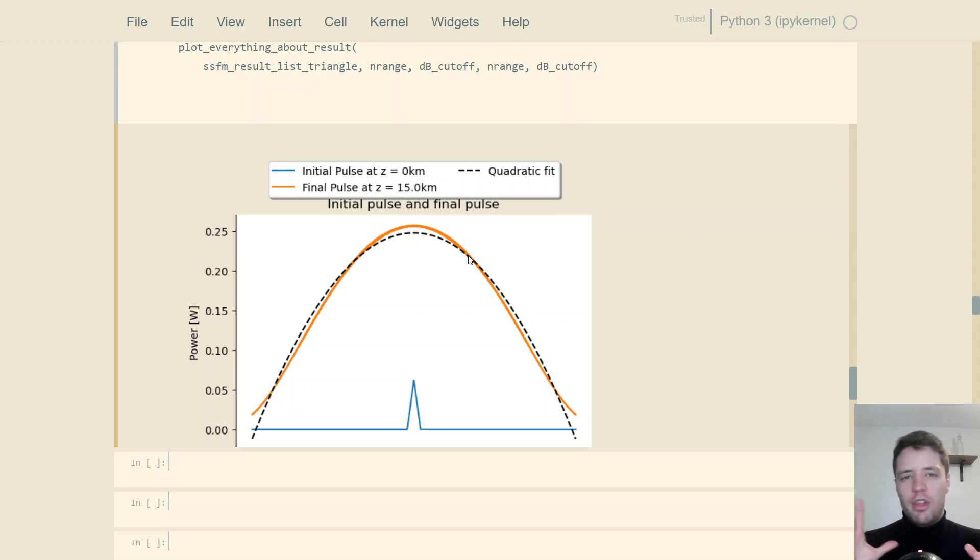And the reason why we call them similaritons is that, unlike solitons, which can actually perfectly preserve their shape, or at least have a consistent oscillation that's predictable, the similaritons will all have these parabolic envelopes, but these will keep broadening and expanding and increasing in size as we propagate down. So again, they look sort of self-similar in terms of the overall geometry, even though the amplitude and the duration is going to increase.